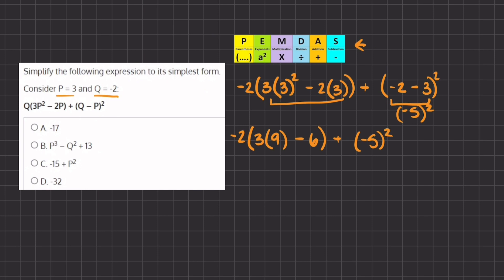Let's continue solving the inside of these parentheses. We have negative 2 times our inner parentheses, which is 3 times 9, giving us 27 minus 6, plus our negative 5 to the power of 2. Now let's distribute this negative 2, but first let's solve the inside. We have 27 minus 6, which gives us 21.